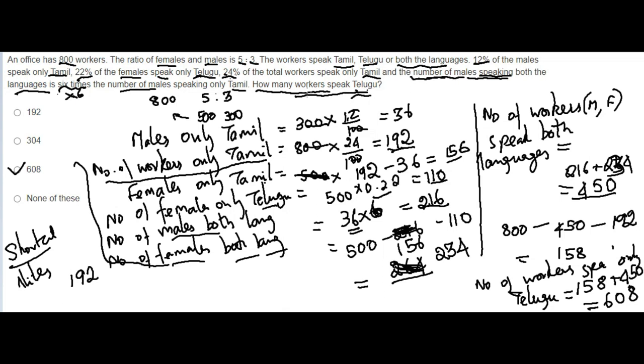They also speak Telugu, is it right? And the question is not asking only the Telugu, the persons who may know Telugu, because the persons who know Telugu, they know Tamil also, is it right? So automatically, 192, is it right? Total number of workers are 800. If you eliminate the persons who know only Tamil, means what you will get?